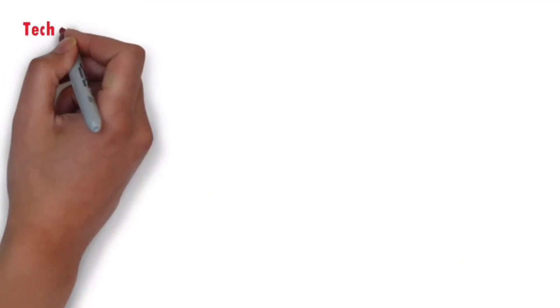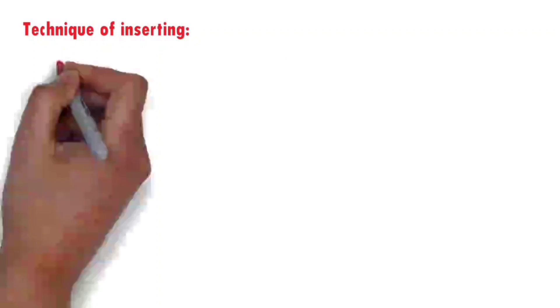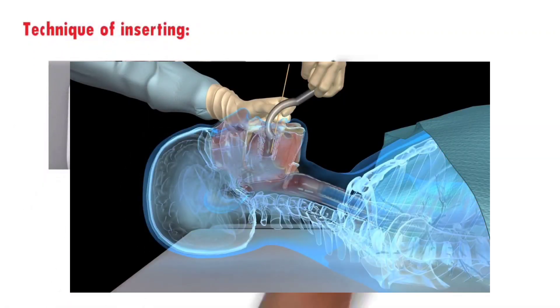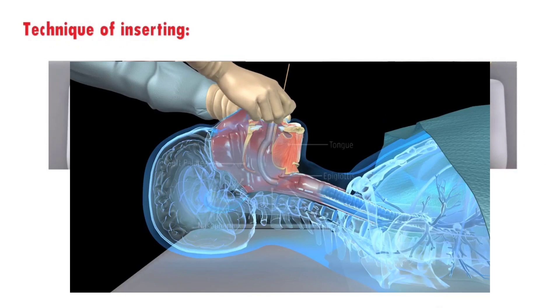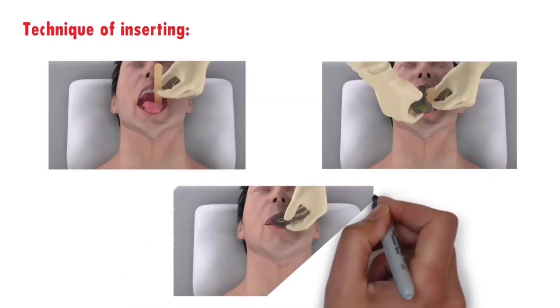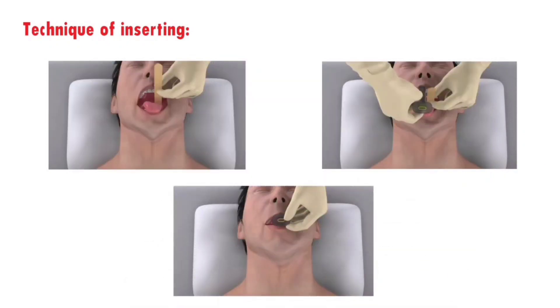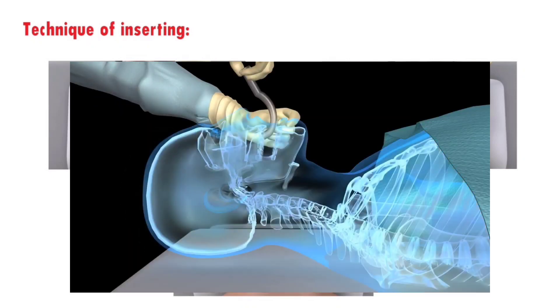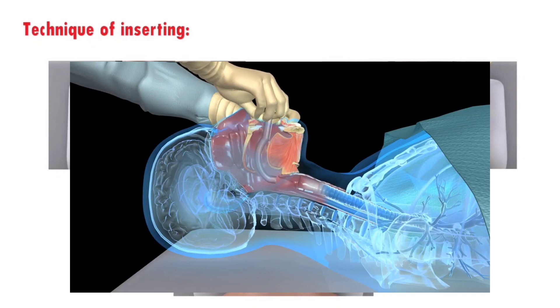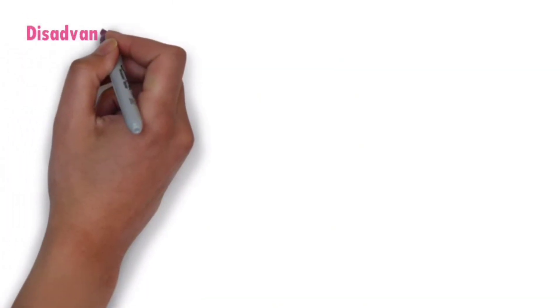Technique of inserting: first depress the tongue using a tongue depressor or a laryngoscope, then the oropharyngeal airway is inserted. If necessary, lignocaine jelly or spray can be used to numb the area. An alternative technique is to insert it upside down until the soft palate is reached, then rotate it 180 degrees and slip it over the tongue.